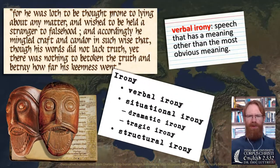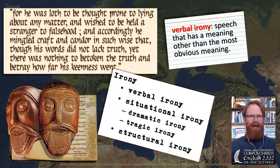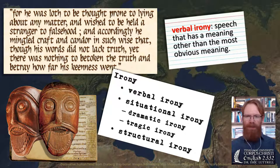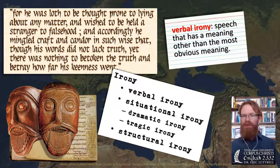Although he was pulling off this deception, Amleth didn't want to be known as a liar. As Saxo tells us, he was loath to be thought prone to lying, and accordingly he mingled craft and candor — guile and secrecy — in such a way that though his words did not lack truth, yet there was nothing to betray how far his keenness went. He wasn't lying, but the words weren't obvious enough to give away how intelligent he was and that he was planning revenge. This is a kind of irony.